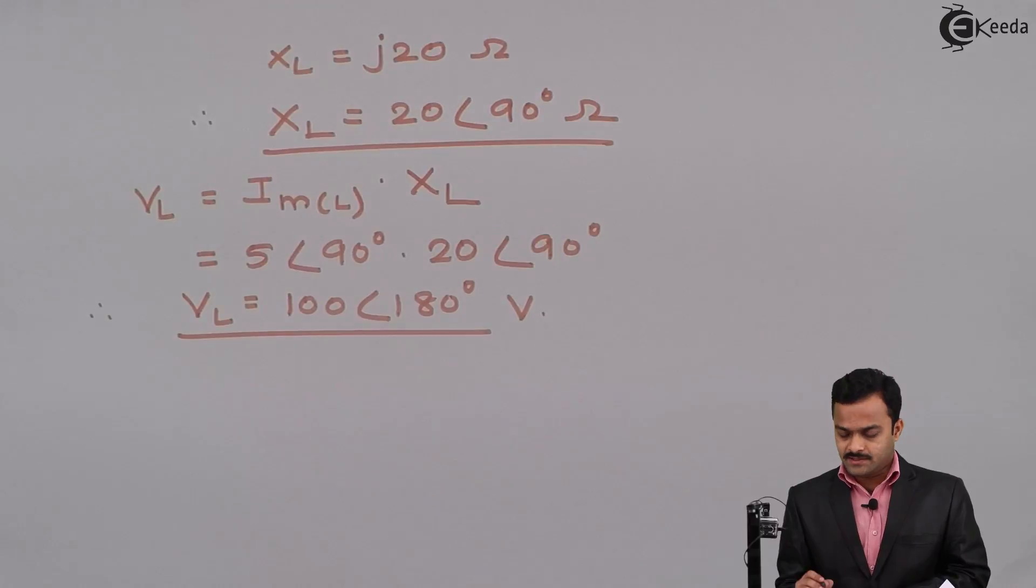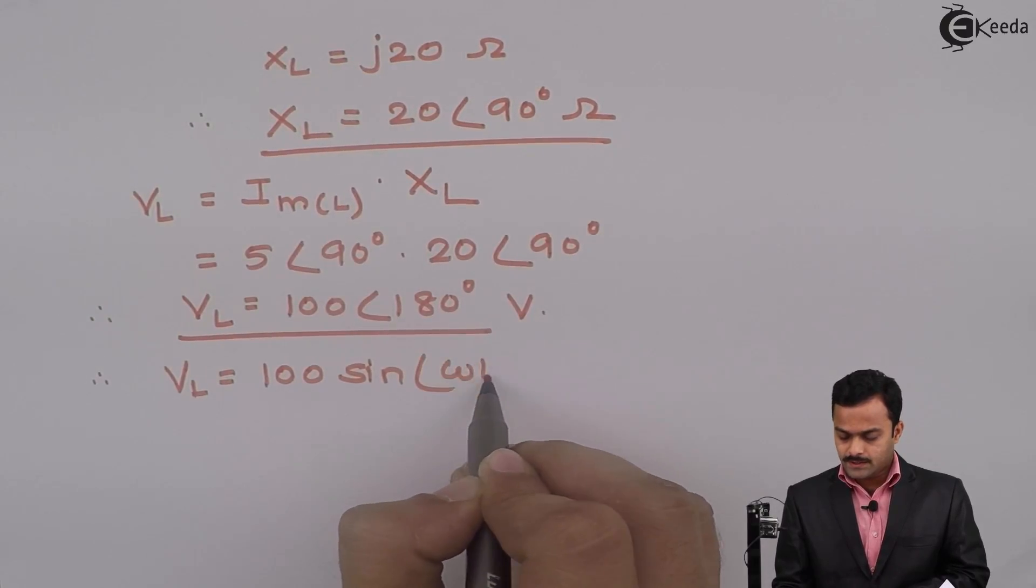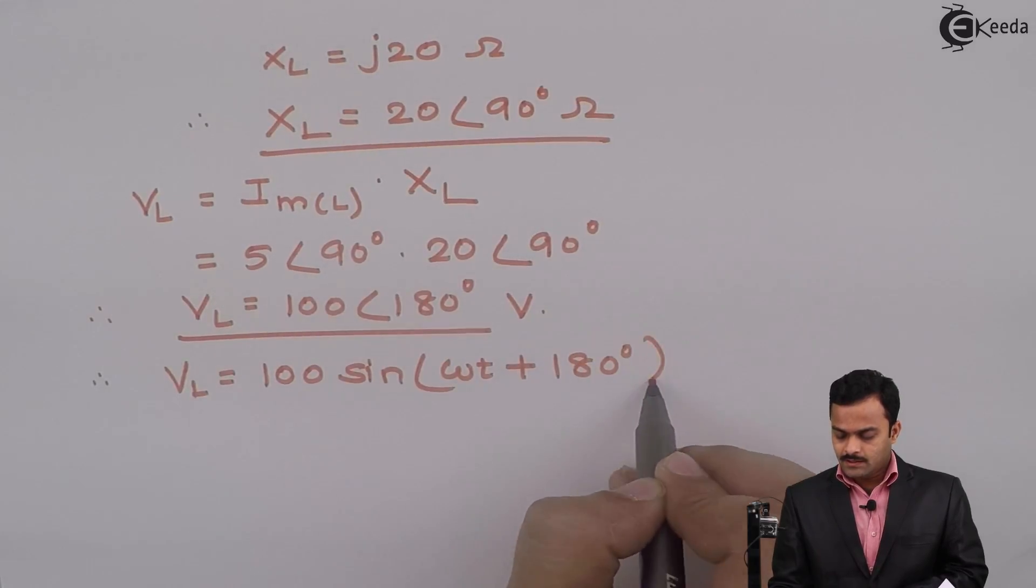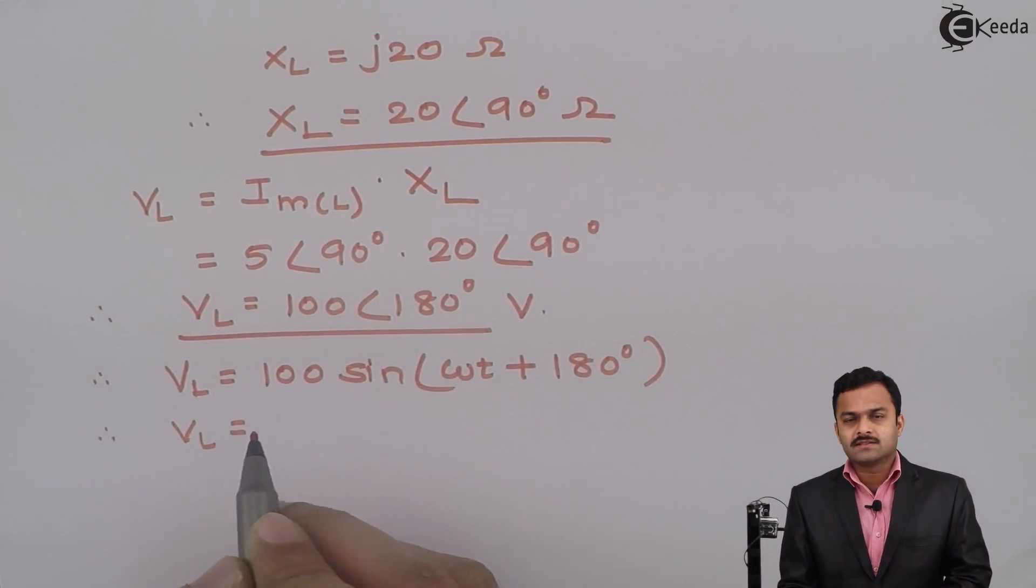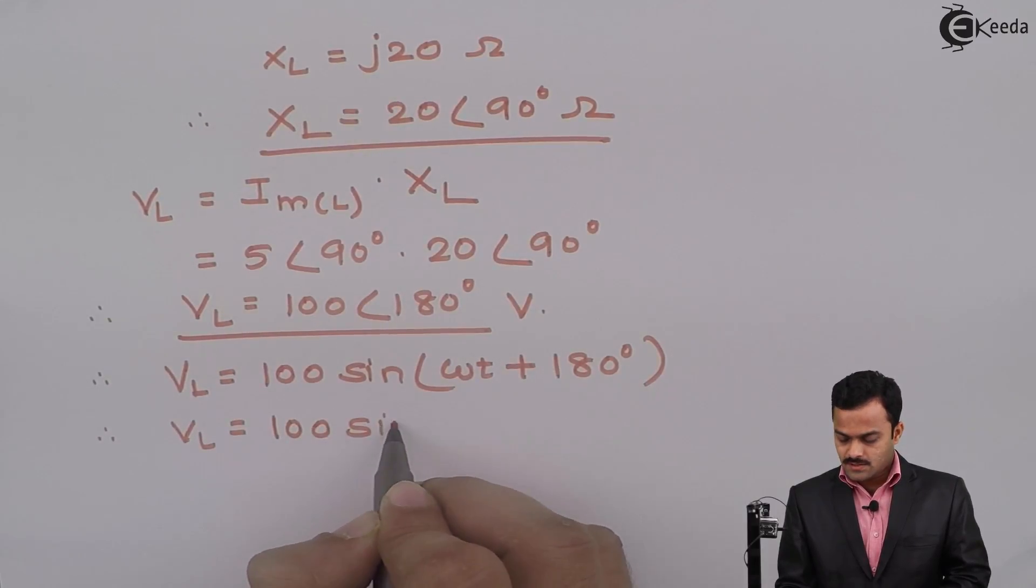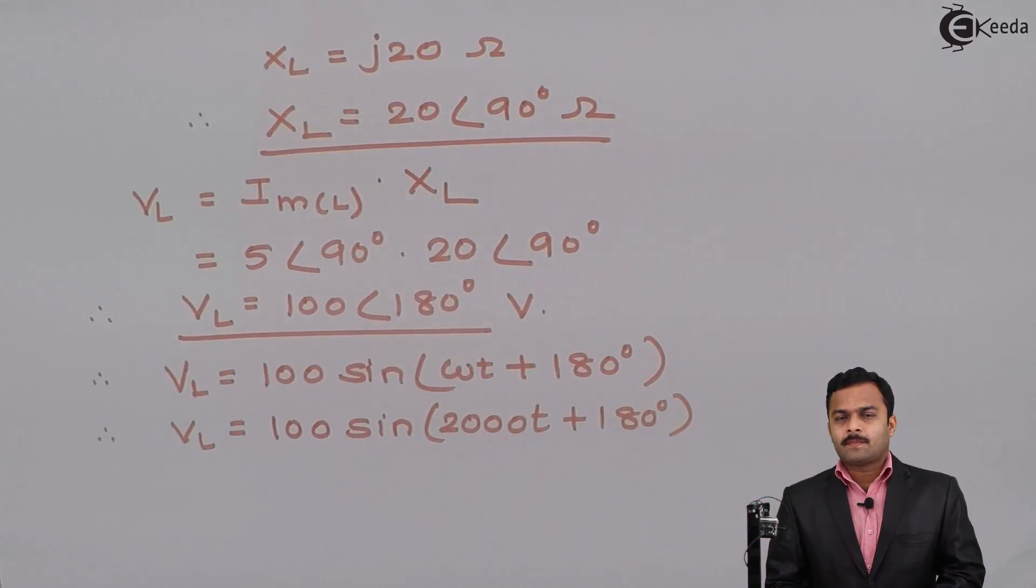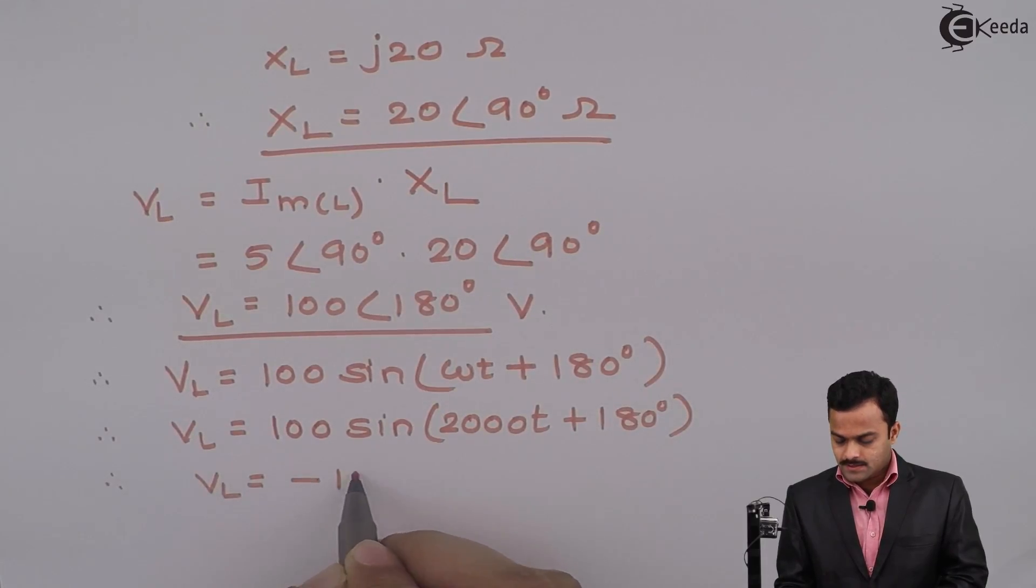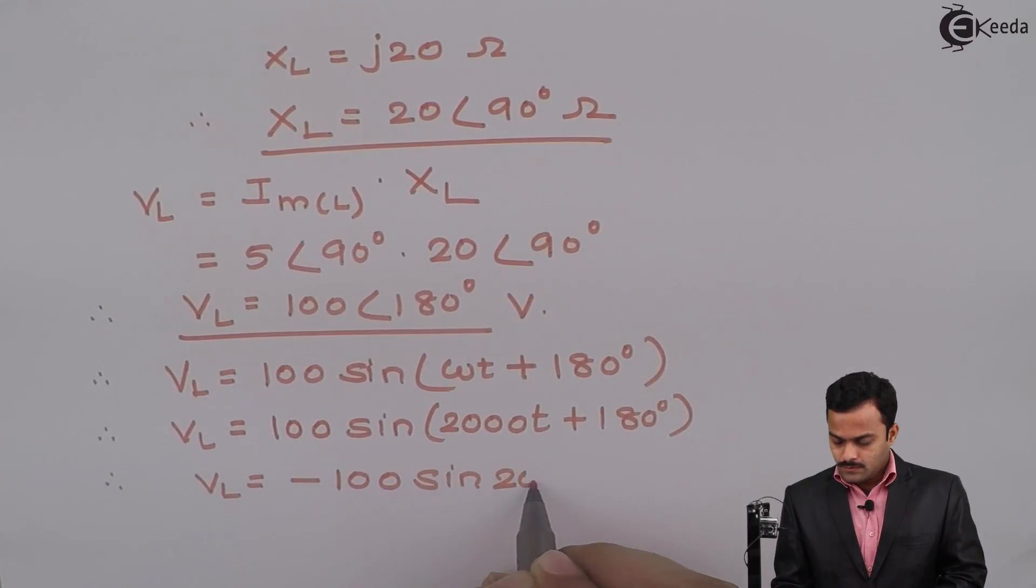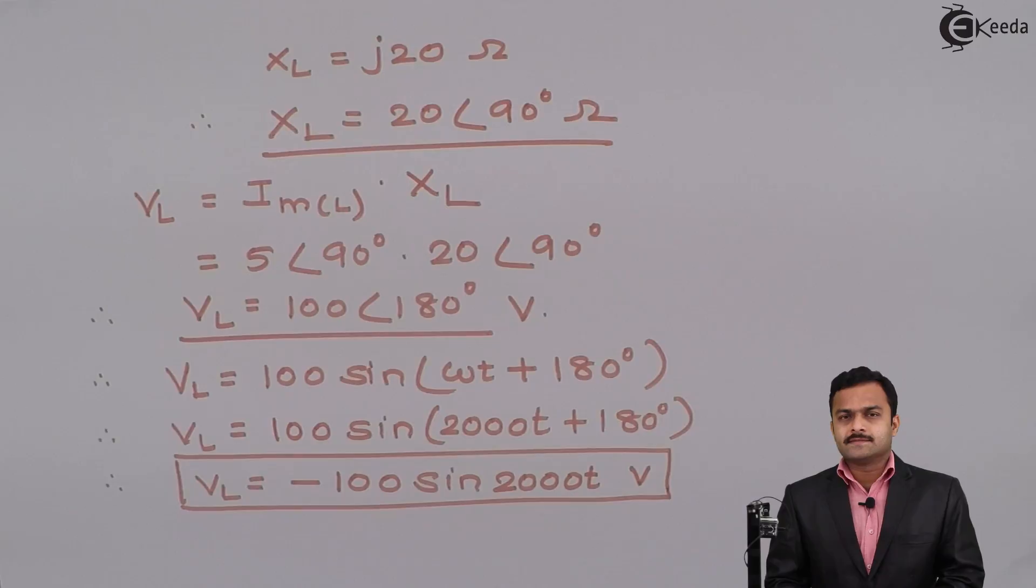Let's write the equation form. V_L will be 100 sin (ωt + 180°), and we know omega is 2000, so the voltage across the inductor is 100 sin (2000t + 180°). We know sin (180° + θ) is minus sin θ, so I can write V_L as minus 100 sin 2000t volt. This is the required answer. Thank you.